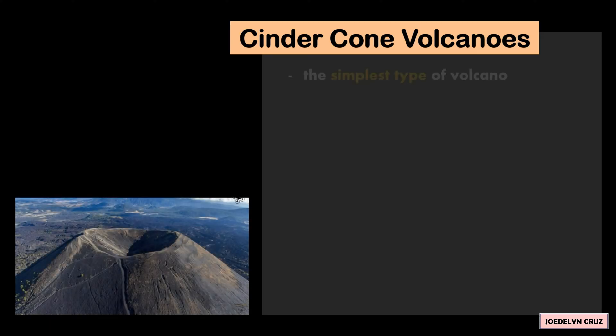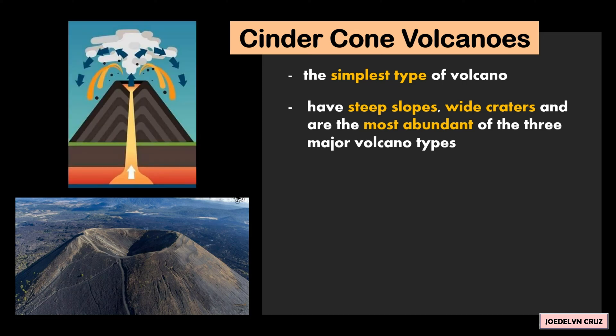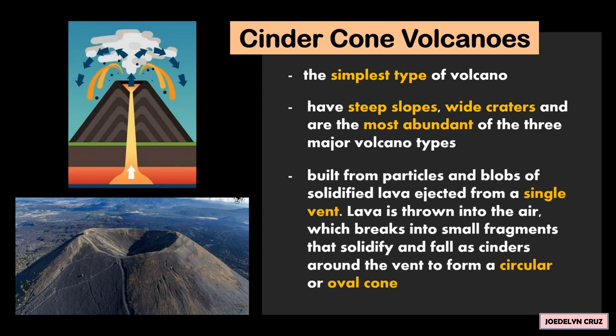Cinder cone volcanoes are the simplest type of volcano. They have steep slopes, wide craters, and are the most abundant of the three major volcano types. They are built from particles and blobs of solidified lava ejected from a single vent. Lava is thrown into the air, which breaks into small fragments that solidify and fall as cinders around the vent to form a circular or oval cone.